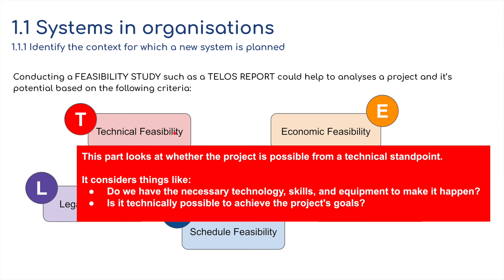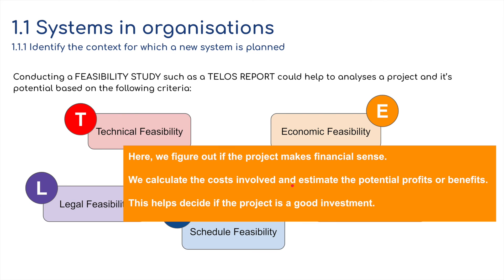Technical feasibility looks at whether the project is possible from a technical standpoint — do we have the necessary technology, skills, and equipment? Is it technically possible to achieve the project's goals? For economic feasibility, we figure out if the project makes financial sense by calculating costs and estimating potential profits or benefits, helping decide if the project is a good investment.